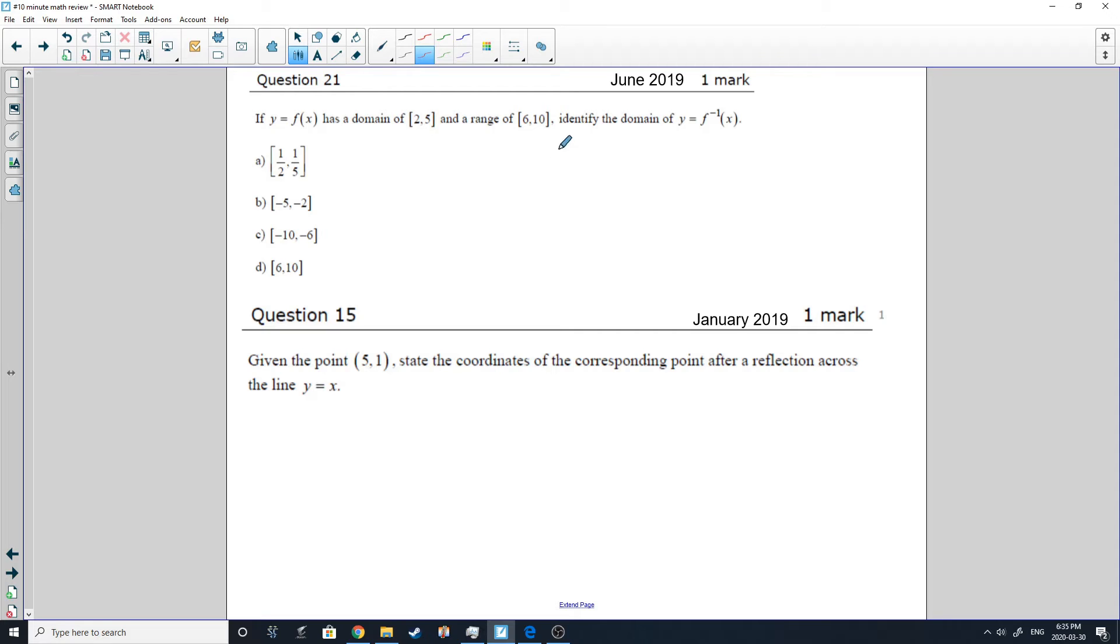Now we got two multiple choice questions. This one is from June 2019. So it's giving me the domain and range of F of X and it's asking me to identify the domain of the inverse function. So the inverse function, the domain and range switch. So what used to be the range is now the domain. So that's going to be right here. So the answer will be D. And for this one, this is from January 2019. They're giving us the point 5,1 and they want to know the coordinates of the corresponding point after reflection in the line Y equal X. Well, reflecting in the line Y equal X simply takes that XY point and it's going to do the inverse. So it's going to make it YX. So to get my answer, I simply have to switch the X value and the Y value. So the answer is going to be 1, 5.